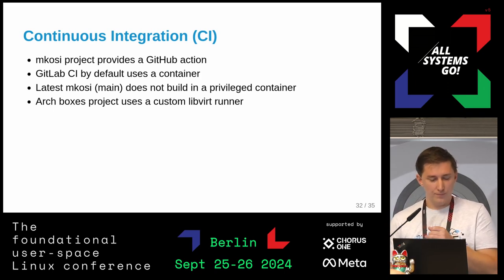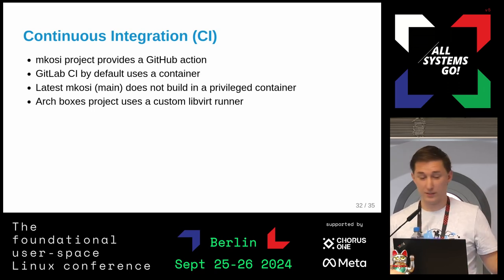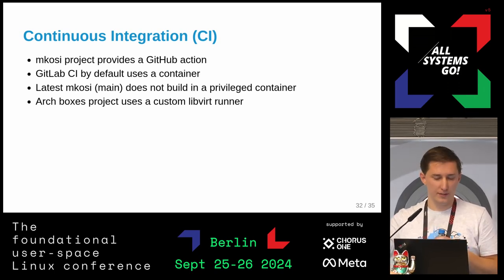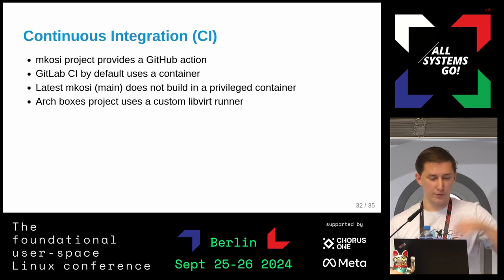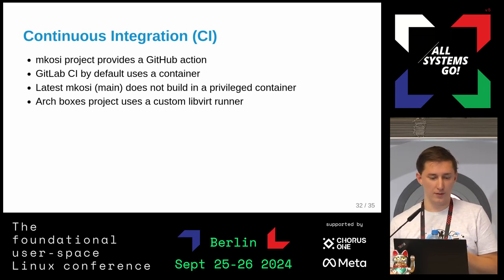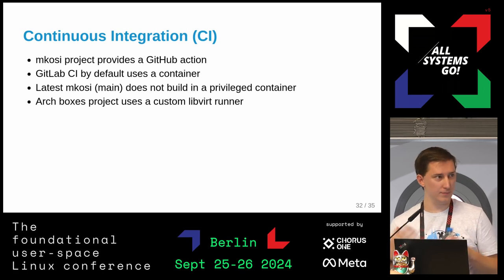I haven't spent too much time on CI because I spent a lot of time getting a reproducible image. MakeOSI provides a GitHub Action, so it's super easy to get started if you use GitHub. As Arch, we have our own GitLab with an unprivileged container where we cannot create a new namespace, so that doesn't work directly. For our current workflow we spin up and boot a virtual machine dynamically and the GitLab runner SSHs into it — we can use the same approach to build a MakeOSI image. The benefit is we can now build as an unprivileged user.